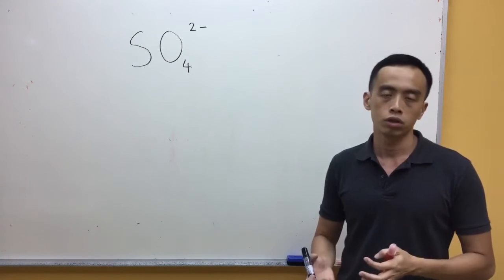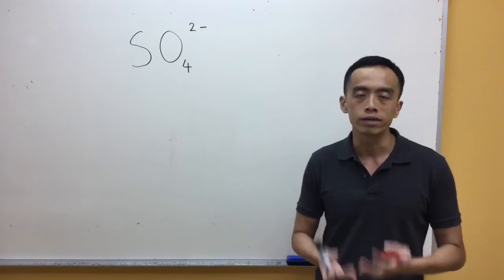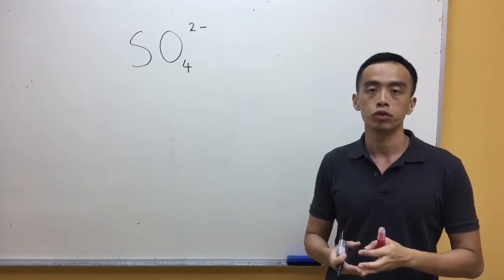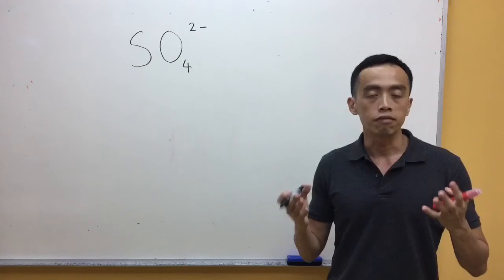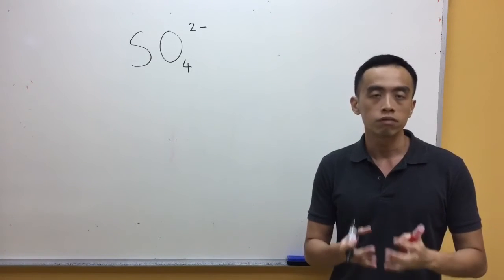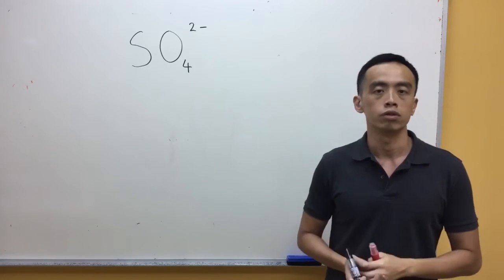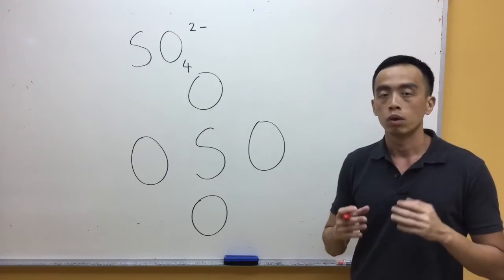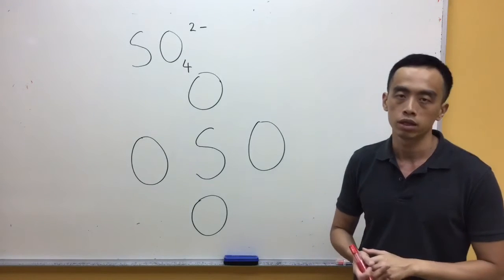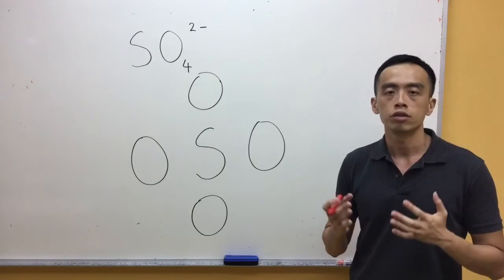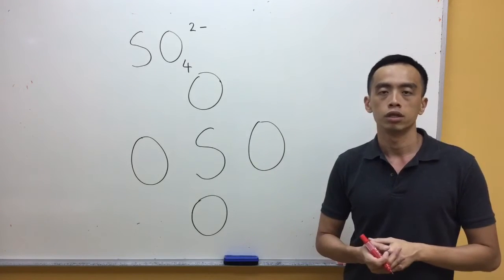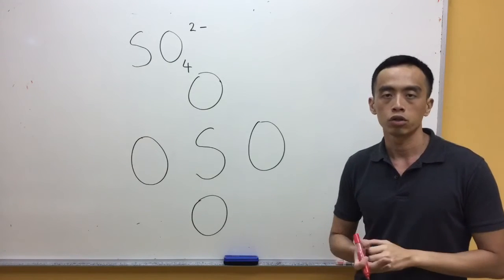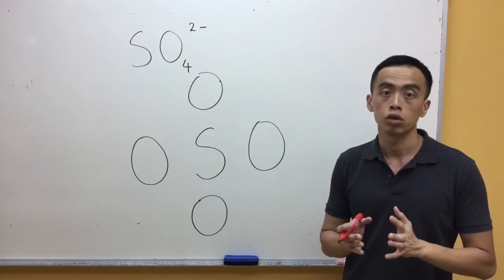Sulphur and oxygen are in the same group, so they require the same number of electrons to be stable. But sulphur, because it is a period 3 element, can expand its octet, so potentially it can form more bonds. We put sulphur in the centre because it can form more bonds with oxygen. There are two additional electrons to account for in sulphate. Since oxygen is more electronegative than sulphur, oxygen will take these additional electrons. It is best to distribute them — giving one additional electron to each oxygen.